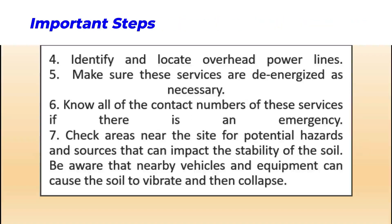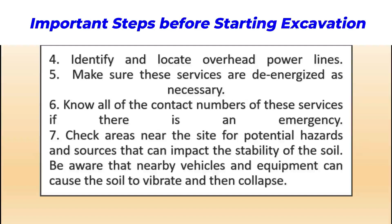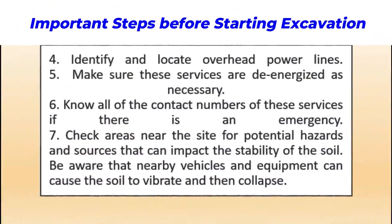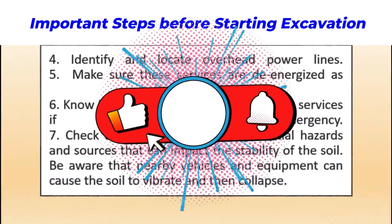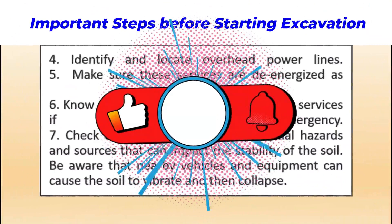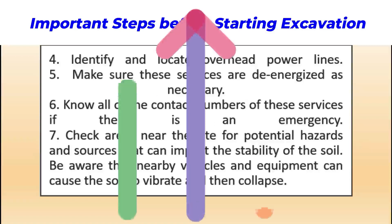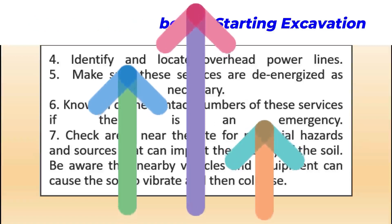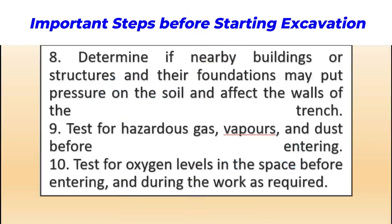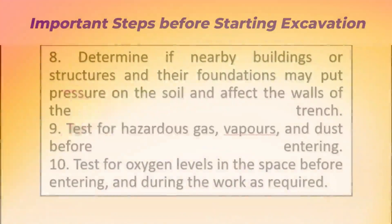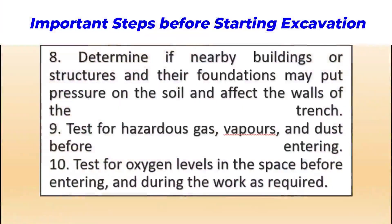Step six: know all the contact numbers of service providers in case of an emergency. Step seven: check areas near the site for potential hazards and sources that can impact the stability of the soil. Be aware that nearby vehicles and equipment can cause the soil to vibrate and collapse, leading to a potential workplace accident. Step eight: determine if nearby buildings or structures and their foundations may put pressure on the soil and affect the walls of the trench.